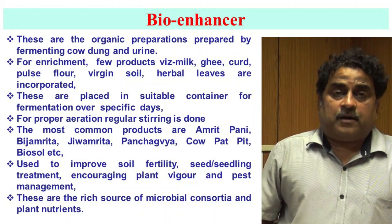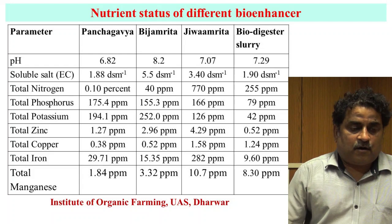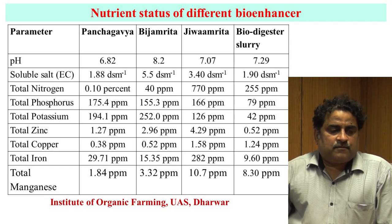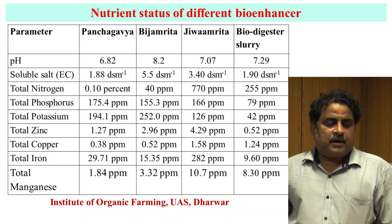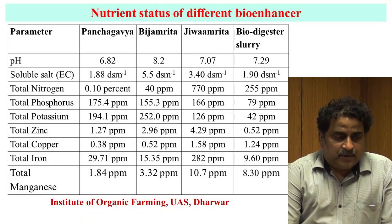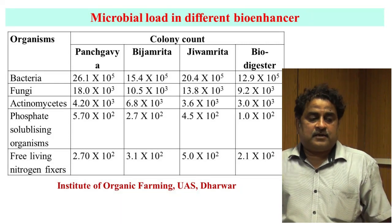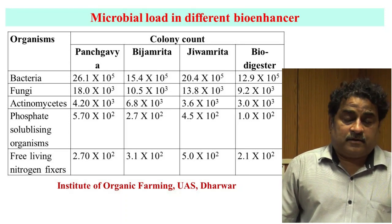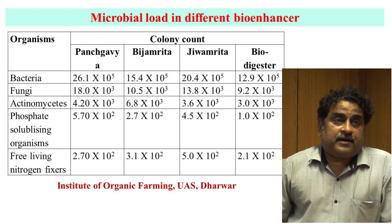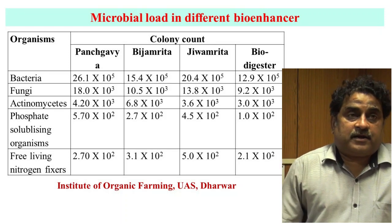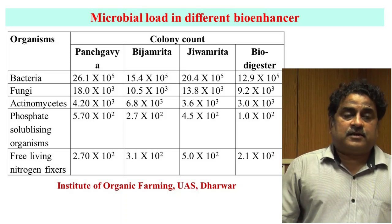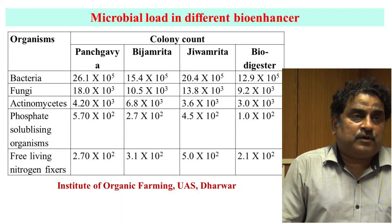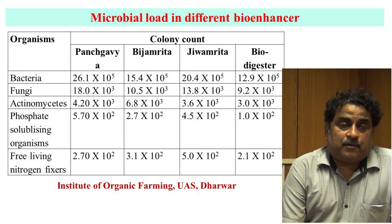Bio-enhancers can be utilized for up to seven days, and after ten days the microbial population declines. They should be applied within one week of preparation to get maximum response. They are used to improve soil fertility, seed and seedling treatment, and encouraging plant vigor and pest management. They are a rich source of microbial consortia and plant nutrients. Chemical analysis shows that Panchagavya, Bijamrit, Jivamrit, and bio-digester slurry contain high levels of nitrogen, phosphorus, potassium, and micronutrients like zinc, copper, iron, and manganese, as well as high populations of bacteria, fungi, actinomycetes, phosphate-solubilizing microorganisms, and free-living nitrogen fixers.